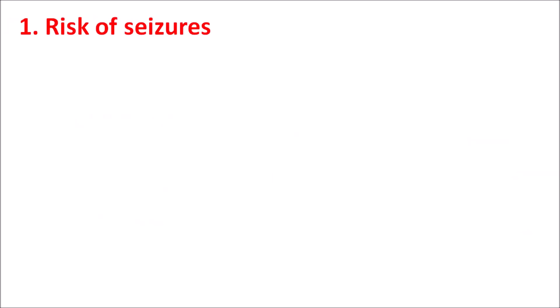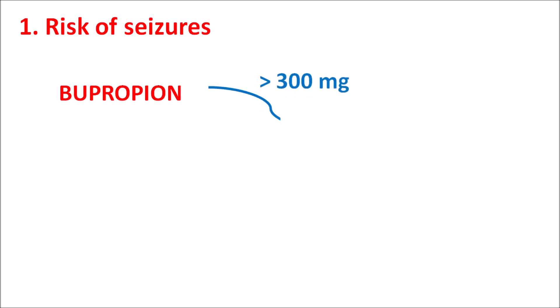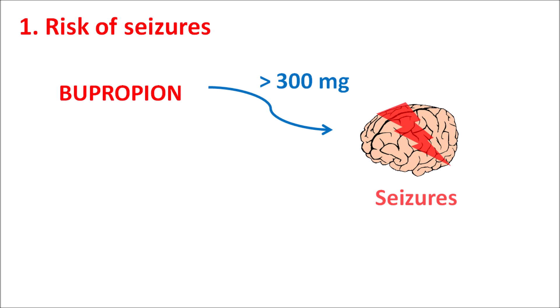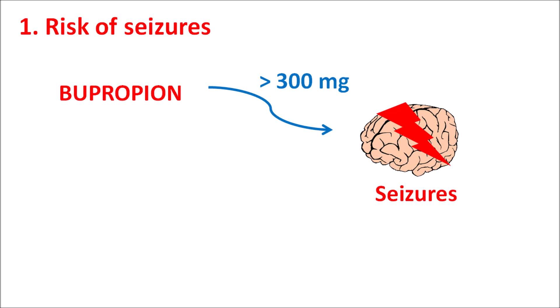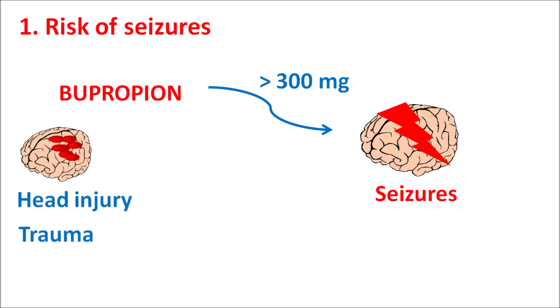The first concern is the risk of seizures. When bupropion is given at a high dose greater than 300 mg, it can stimulate the CNS and increase the risk of seizures. At the therapeutic dose this is not that significant, but when used at very high doses or at frequent intervals, the risk of seizures increases. Similarly, when the dose is suddenly increased, seizure attacks can occur. The dose should be slowly escalated to eliminate any induction of seizures. That is why bupropion is contraindicated in patients with any existing seizure disorders.